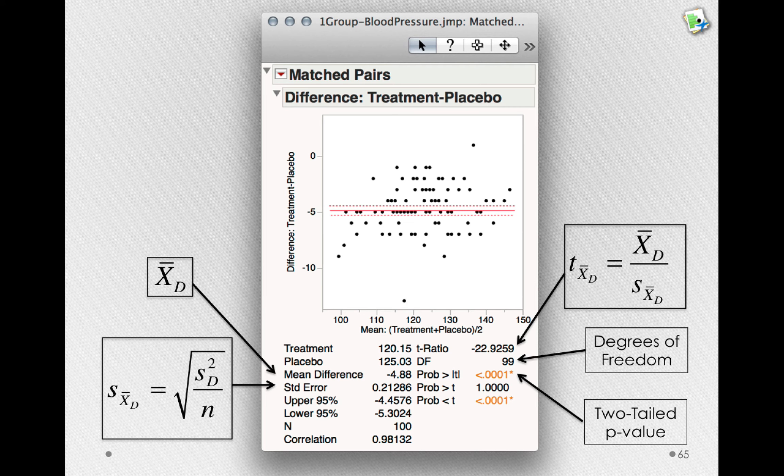Although you can perform the same hypothesis test by making the difference scores yourself, I would recommend using the matched pairs platform. This platform gives you more options, and you get this particular plot that lets you identify whether individuals experience the same amount of effect depending on where they started.